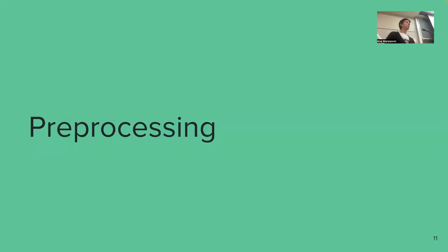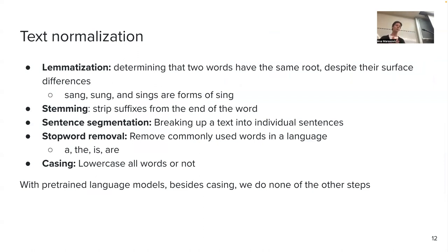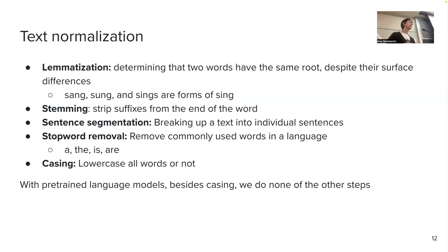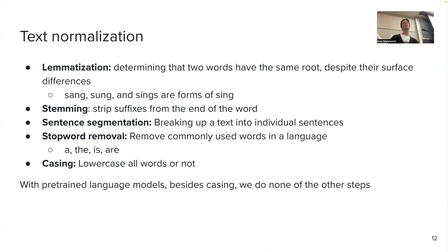Before we could even produce vectors, we had to do some preprocessing. The first preprocessing we can do is text normalization: we can lowercase the text, remove stop words, strip suffixes from words (which we call stemming), or normalize each word to its lemma — the canonical form of the word. With pre-trained language models later on, we stop caring about those things. When demonstrating Hugging Face, the preprocessing function only did tokenization, and sometimes lowercasing, but nothing else.